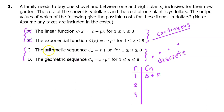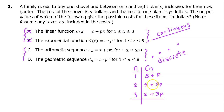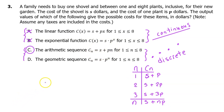Now we need to decide if this will be an arithmetic or geometric sequence. If we buy 1 plant, the cost is 1 shovel plus 1 plant. For 2 plants, it's 1 shovel plus 2 plants. If we buy n plants, the cost Cn will be S plus nP. The answer is C.